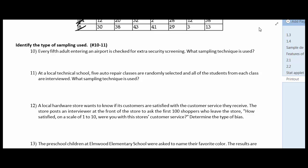So number 10, every fifth adult entering an airport is checked for extra security screening. So the fact that they're starting every fifth, that's actually an example of systematic.